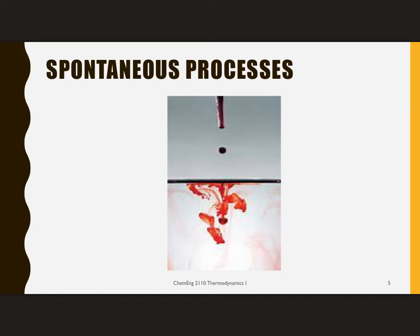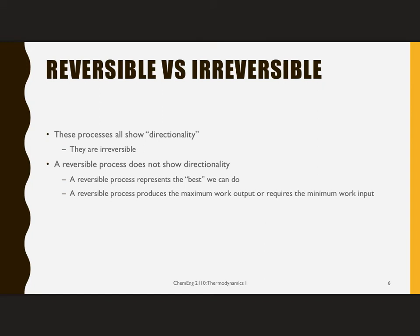If we were to drop just one drop of red food coloring into a glass of water, diffusion would cause it to spread throughout the water until you ended up with something that was a nice light red mix. Will it ever reverse itself and have all of that red food coloring concentrate itself back into that drop? These processes all show directionality — they spontaneously happen in one direction. They are called irreversible processes.